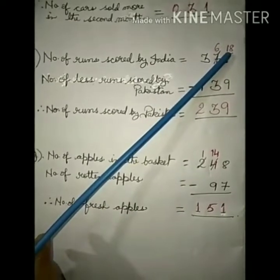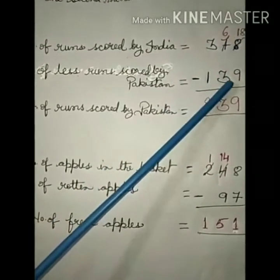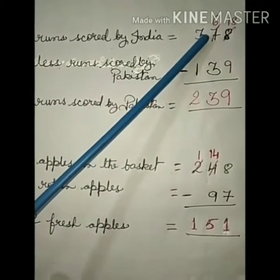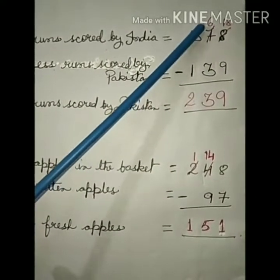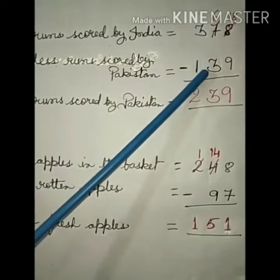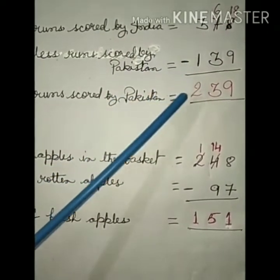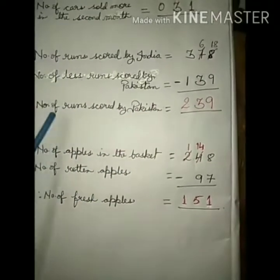18 minus 9 is 9. Here we will change this, it becomes 6. So 6 minus 3 is 3, and 3 minus 1 is 2. So therefore, number of runs scored by Pakistan is 239.